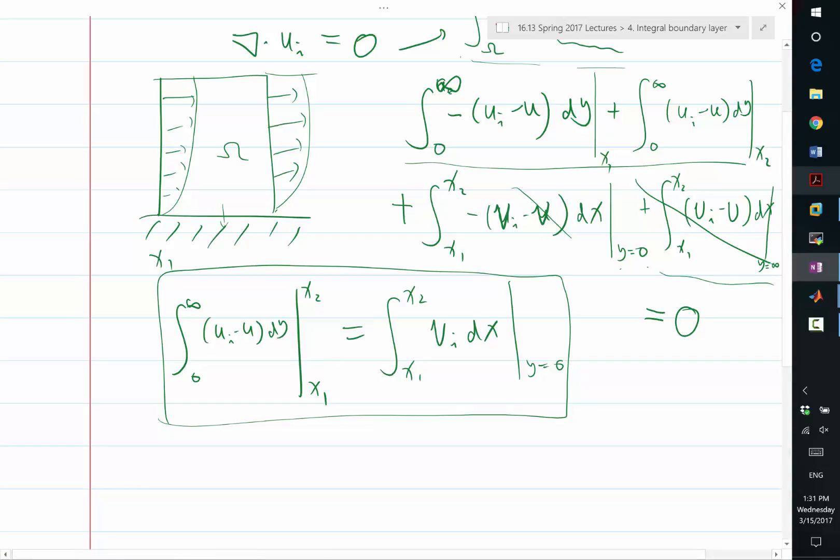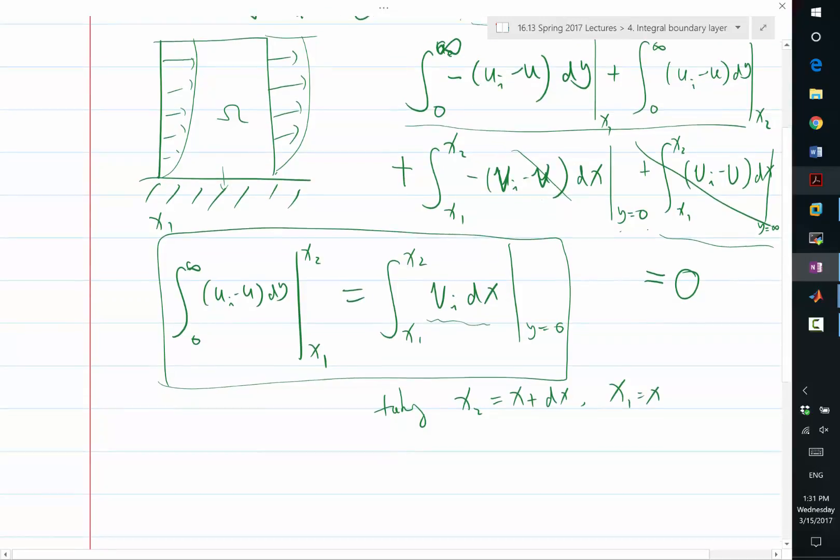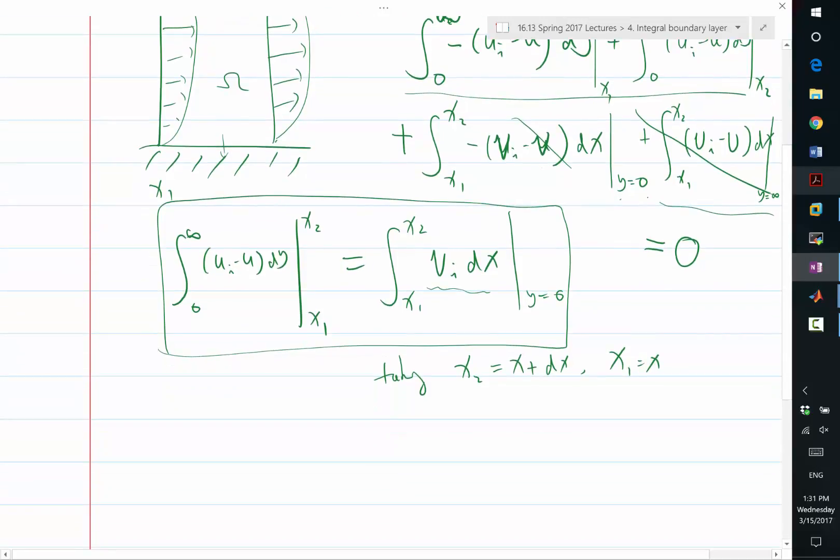And then, this integral formulation in x, right? I'm not taking difference in y. The integral in x becomes just a vi. Taking x2 is equal to x plus dx, x1 equal to x. So this whole thing becomes vi times dx. Vi at x times dx. This is y equal to 0.